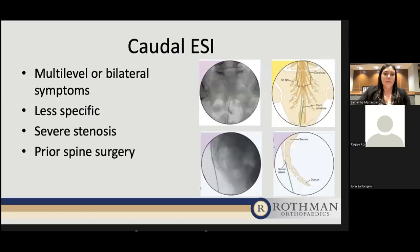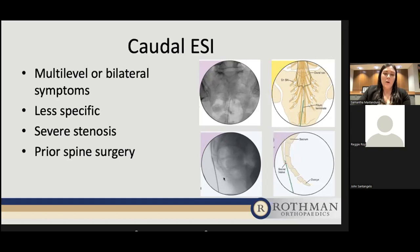The caudal epidural is good for patients with multi-level or bilateral symptoms because it covers a broader area. It's less specific in terms of delivering medication to a particular nerve root, but is good for patients with severe stenosis because we enter through the sacral hiatus at the bottom — patients usually don't get stenosis there — providing broader coverage. This technique can also be used in patients who have had prior spine surgery. The fluoroscopic images show the needle entering from the bottom going up along the sacrum, with a side view also shown.